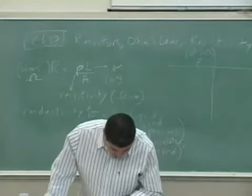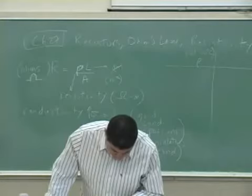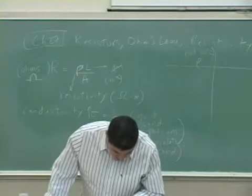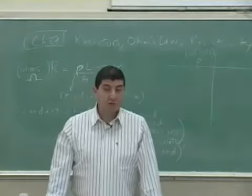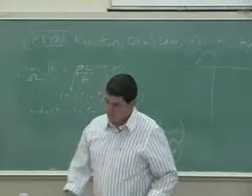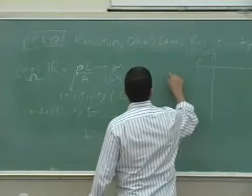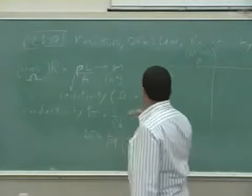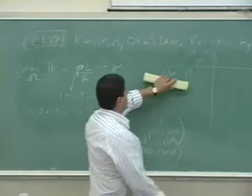So out of those, the smallest one is going to be silver. Out of the metals, the smallest resistivity is going to be silver. And so it's going to be 1.59 times 10 to the negative 8.